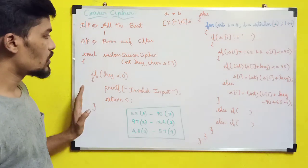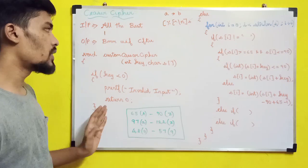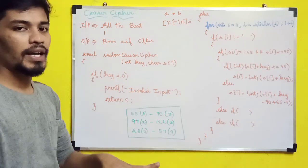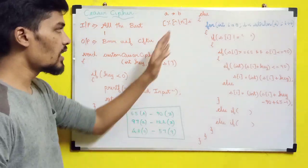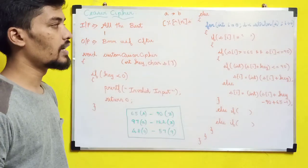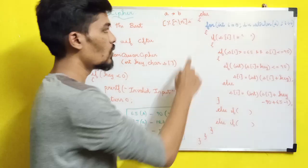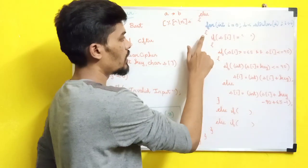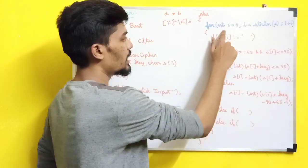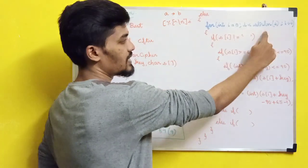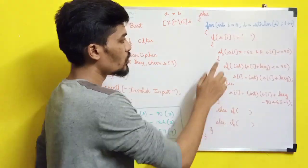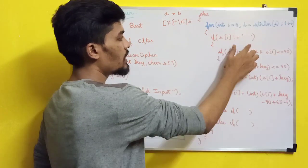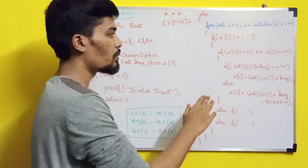Suppose the key is 1. For int i = 0; i less than strlen(s); i++, we iterate through the string. If s[i] is greater than or equal to 65 and s[i] is less than or equal to 90, this is our uppercase condition.